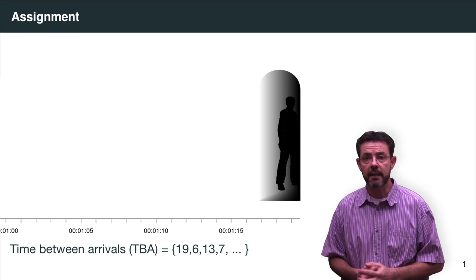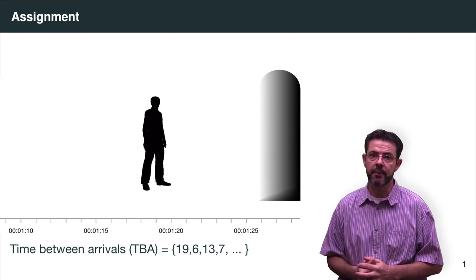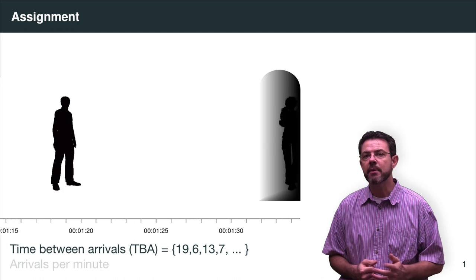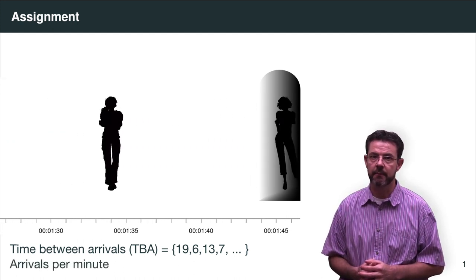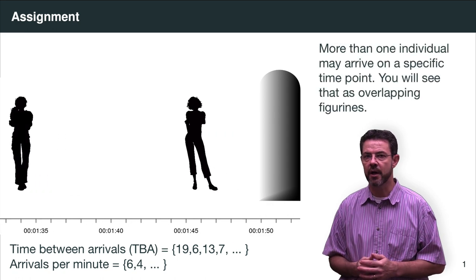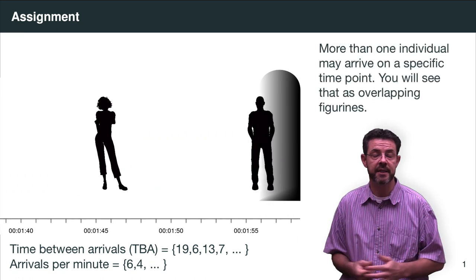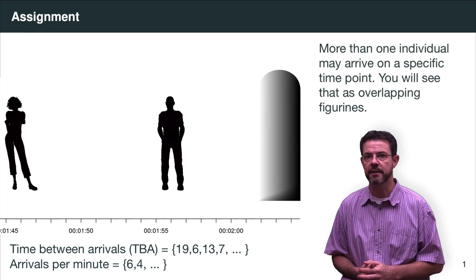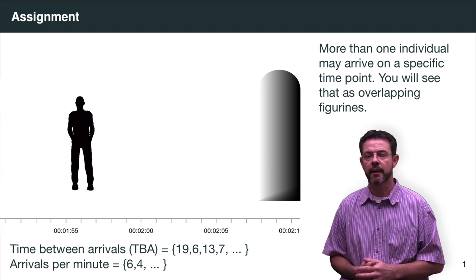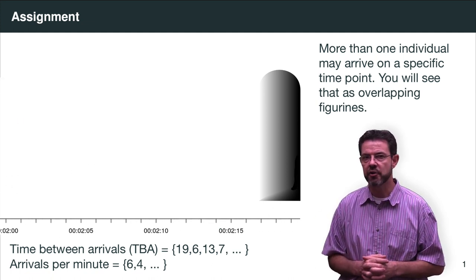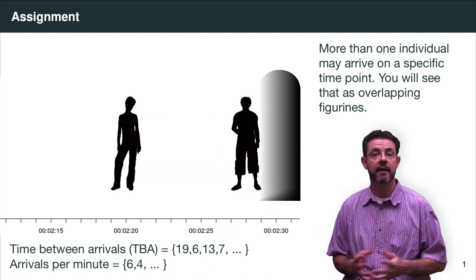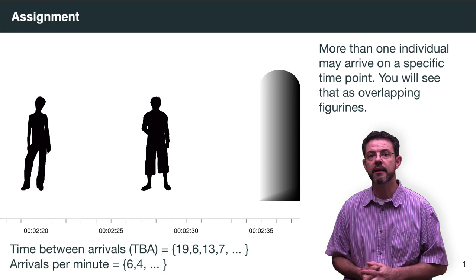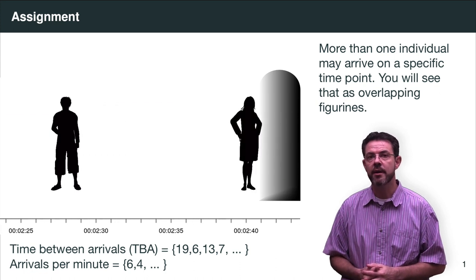The second metric that you also need to capture and keep is the number of arrivals per minute. We give you 60 minutes of data, so you will in the end have 60 observations for your second set. For every minute as it passes, make sure that you count the number of individuals and record it, and then in the end answer the questions on ClickUp.